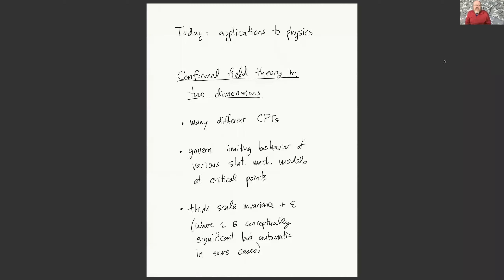I'm not an expert in this, and I'm assuming that most of you aren't experts in it either. There's some fascinating mathematics here, and one of the things we'll run into is that quantum field theory is not entirely mathematically rigorous—there are certain aspects that are, but a lot that aren't. We'll try to identify particular parts that can be formulated in clean mathematical ways, despite the fact that we won't be able to do that for all of physics.